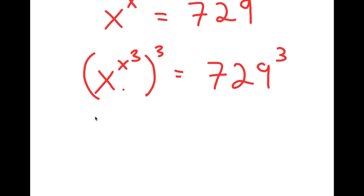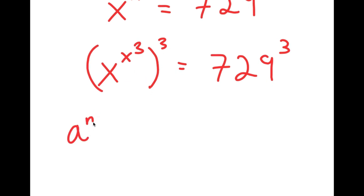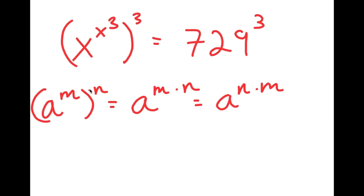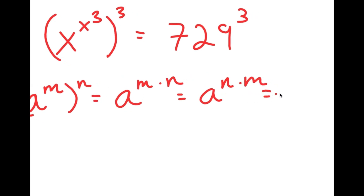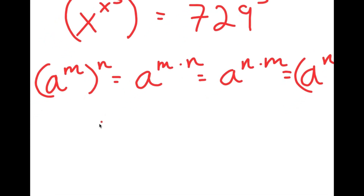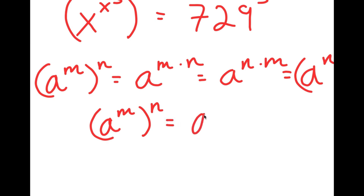Now, if I have something in the form a to the power of m to the power of n, this is the same thing as a to the power of m times n. Now, m times n I can also rewrite as n times m. And if something in the form a to the power of m to the power of n equals a to the power of m times n, then a to the power of n times m should also equal a to the power of n to the power of n. So in simpler terms, a to the power of m to the power of n is equal to a to the power of n to the power of m.